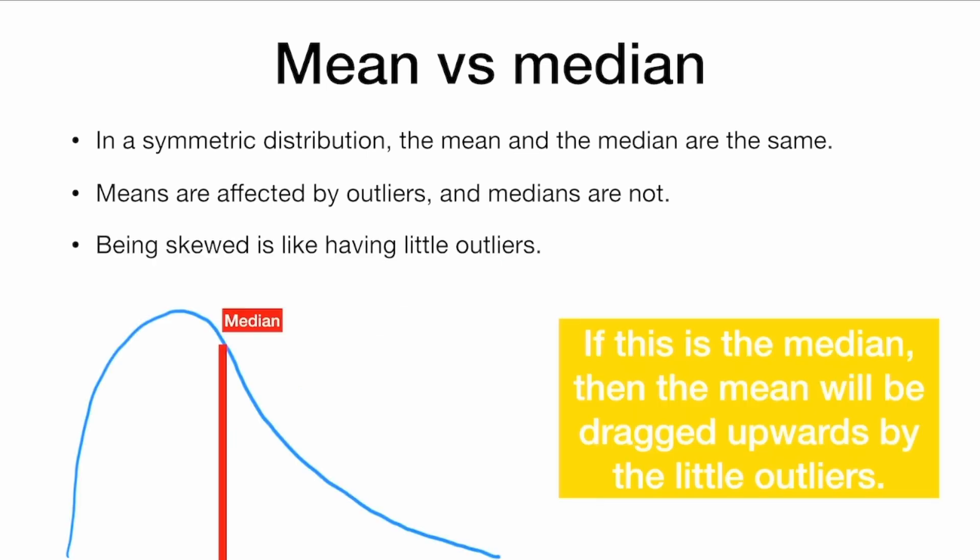Because being skewed is kind of like having little tiny outliers. We have some tiny outliers here. So if this red line is the median, then the mean is going to be dragged upwards by these little tiny outliers. So the mean will be up here.